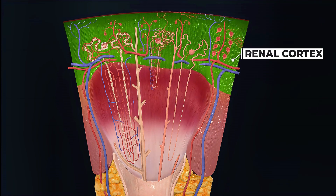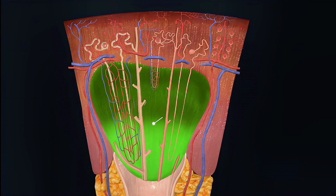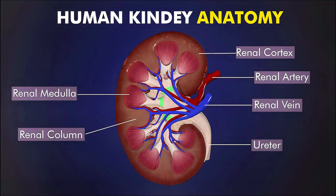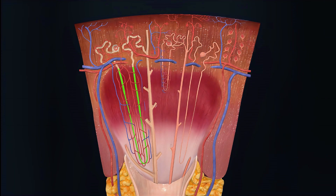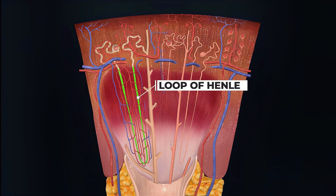The renal cortex is the outer region of the kidney, as you can see here. The deeper region inside the kidney is called the renal medulla. After the PCT, the second part of the renal tubule starts. This part is a U-shaped tube present in the medullary region of the kidney, called the loop of Henle.